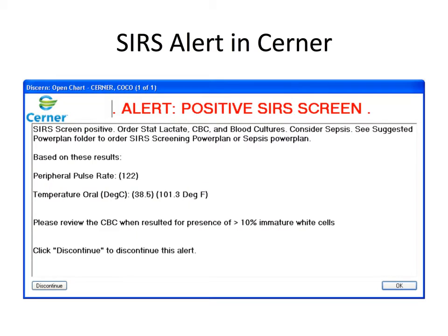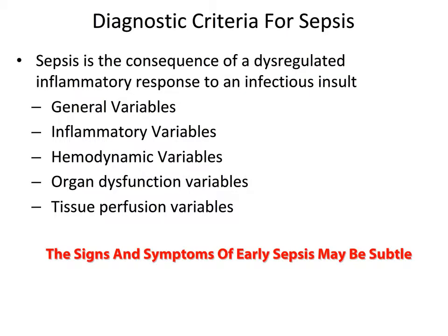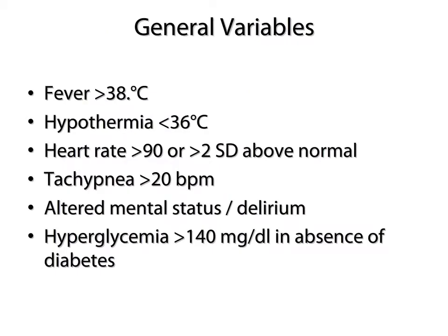Here is an example of a SIRS alert in our Cerner system. Let's review some diagnostic criteria for sepsis. Sepsis is a consequence of a dysregulated inflammatory response to an infectious insult. There are general variables to consider: inflammatory, hemodynamic, organ dysfunction variables, and tissue perfusion variables. The signs and symptoms of early sepsis can be very subtle. General variables would include fever, hypothermia, elevated heart rates, respiratory rates, importantly altered mental status, early delirium, and hyperglycemia greater than 140 mg/dL in the absence of diabetes.